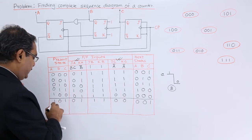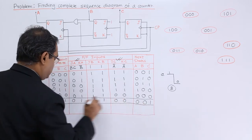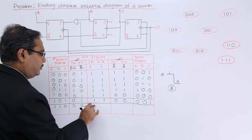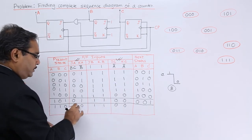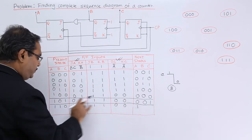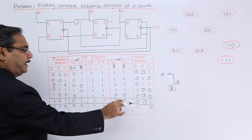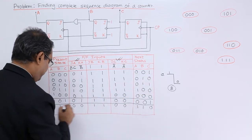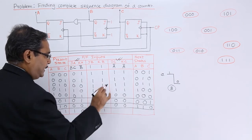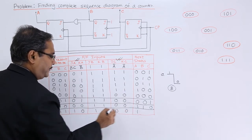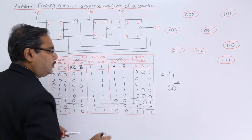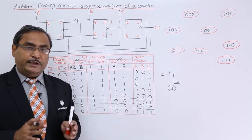Now going for states 6 and 7. For state 1,1,0: BC is 0, B-bar is 0, B is 1. A-bar is 0, so no change — previous output of A was 1 so it remains 1. For 0,0 no change, and C did not provide any clock pulse to B so it remains the same. For state 1,1,1: BC is 1, B-bar is 0, A-bar is 0,0. For 1,0 output is 1, 0,0 means no change so 1 remains. C did not give any clock pulse to B so B remains unchanged.